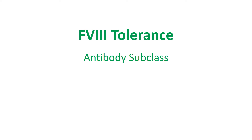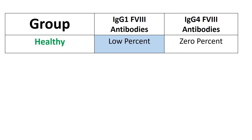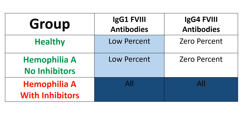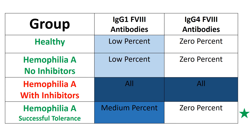Here is some interesting data about factor VIII tolerance and how the antibody subclass changes after tolerance induction. Healthy individuals can make low levels of IgG1 antibodies against factor VIII. Hemophilia A patients without inhibitors can also make low levels of IgG1 antibodies to factor VIII. All patients with hemophilia A with inhibitors make IgG1 and IgG4 antibodies against factor VIII. However, patients with hemophilia A who achieve tolerance have only modest levels of IgG1 antibodies and no IgG4 antibodies against factor VIII. This reveals that the subclass of antibodies against factor VIII changes with tolerance — while all patients with hemophilia A with inhibitors make IgG4 antibodies to factor VIII, no other group makes this subclass. This data clearly demonstrates that antibody production is altered by tolerance induction therapy.